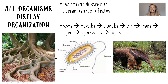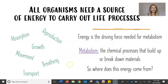So even a plant, which is a multicellular organism, has organs and organ systems that make up the entire organism. Our next characteristic of life is that all organisms need a source of energy to carry out life processes — that's absorption, reproduction, growth, movement, breathing, transport, and more. Those all require energy.